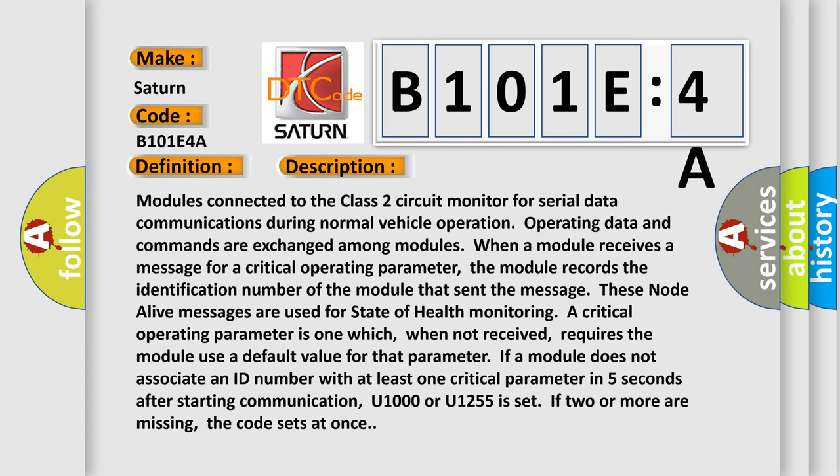These node alive messages are used for state of health monitoring. A critical operating parameter is one which, when not received, requires the module use a default value for that parameter. If a module does not associate an ID number with at least one critical parameter in five seconds after starting communication, U1000 or U1255 is set. If two or more are missing, the code sets at once.